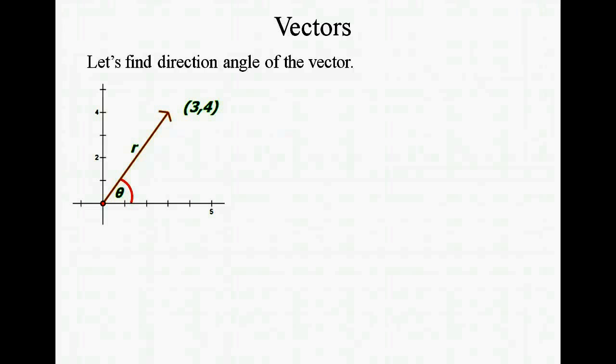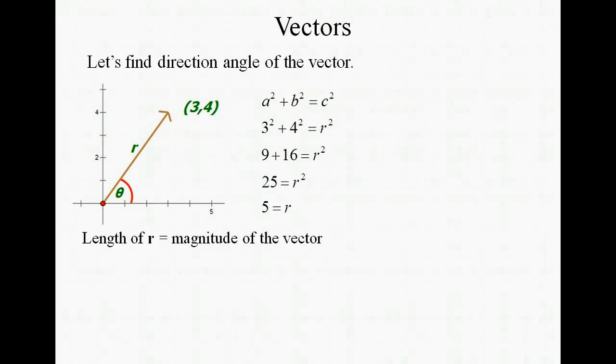Let's find a direction angle now. So whenever we're looking for a direction angle, we're looking for the angle that starts at the x-axis and goes in the counterclockwise direction until it meets with the vector. So here we have vector that ends at (3,4). The first thing that we're going to do is find the magnitude of the vector r. So plugging into our Pythagorean theorem, we ended up with r has a magnitude of 5.